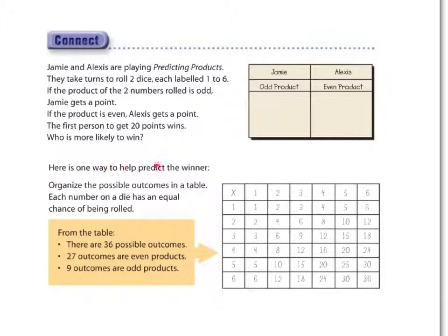Who would be more likely to win? Here's one way to help you predict the winner: organize the possible outcomes into a table. Each number on a die has an equal chance of being rolled — it's just as likely you'll roll a one, two, three, four, five, or six. From the table, we can see that there are 36 possible outcomes altogether. 27 of them are even.